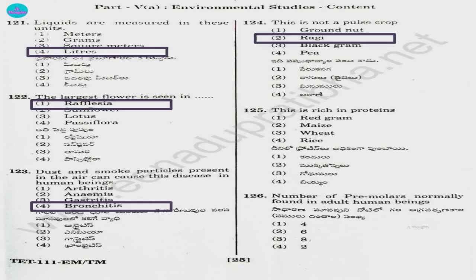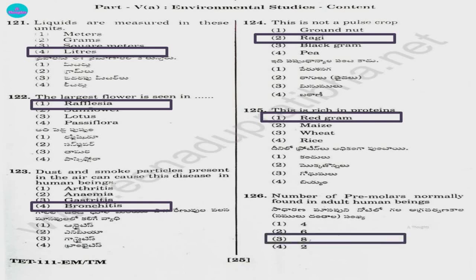Question 125. This is rich in proteins: 1) red gram, 2) maize, 3) wheat, 4) rice. Answer is option 1, red grams. Question 126. Number of premolars normally found in adult human beings: 1) 4, 2) 6, 3) 8, 4) 2. It's option 3, 8.